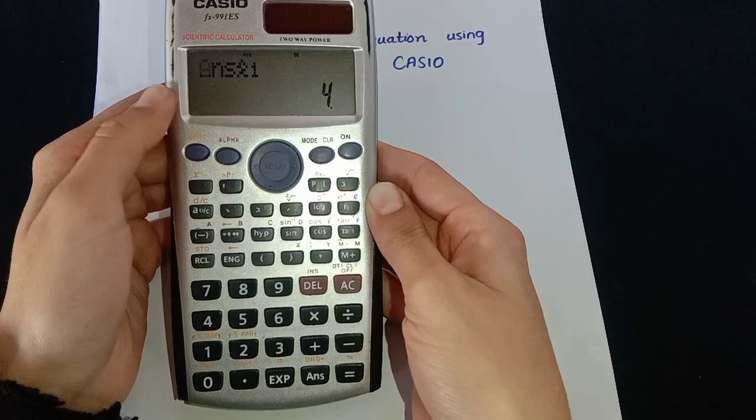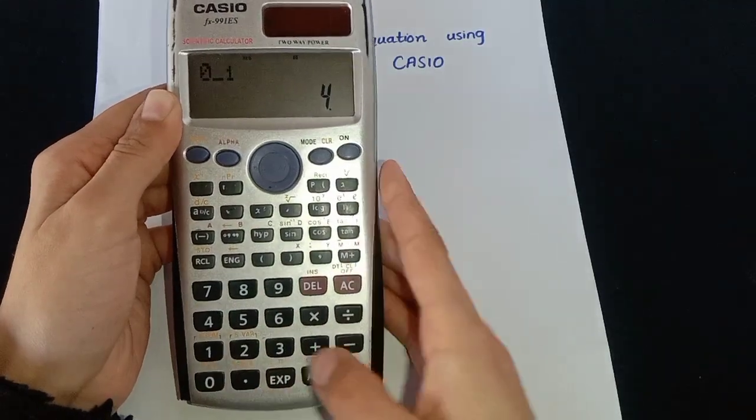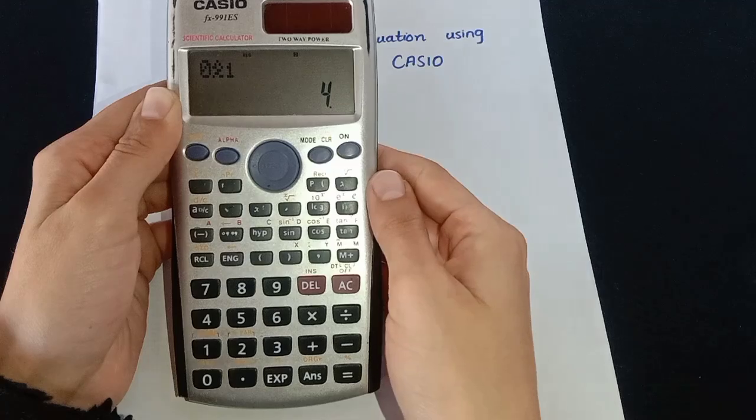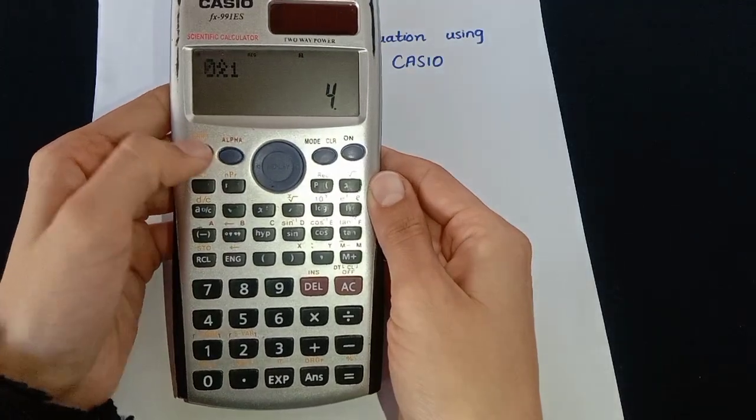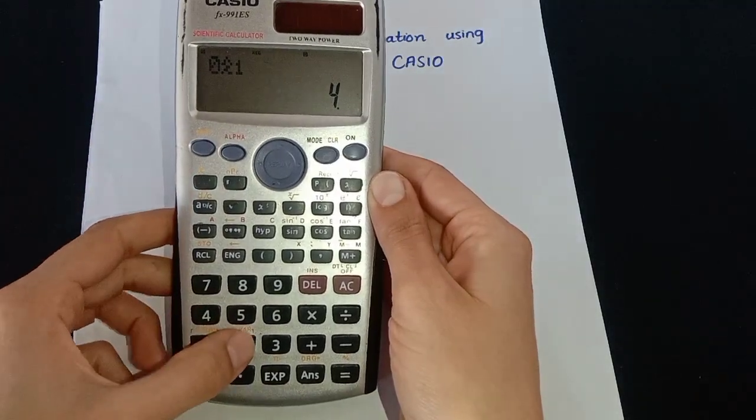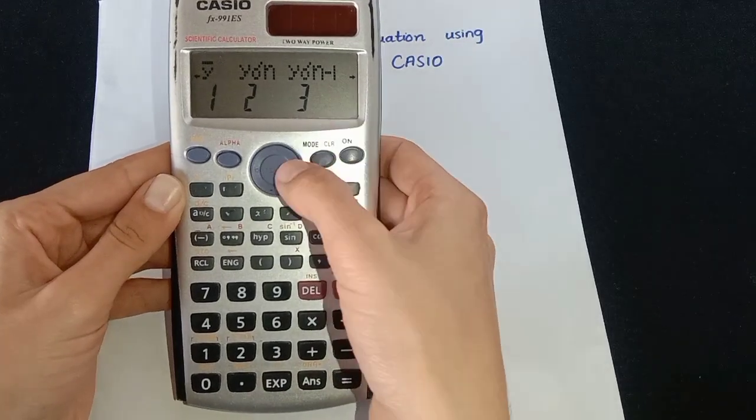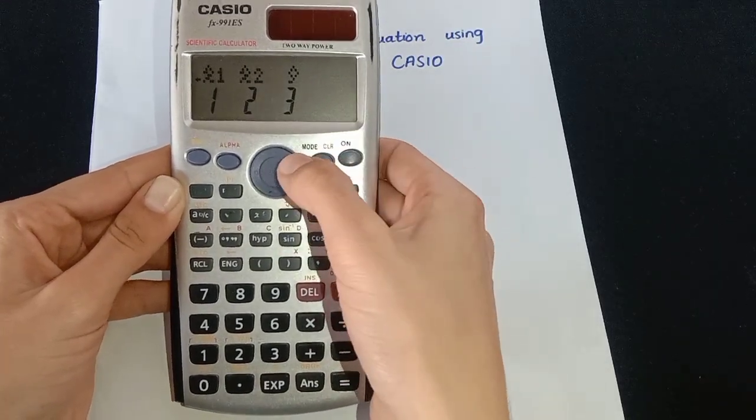left arrow key, then press 0 and then equal sign, and we will get the first value for x1, which is equal to 4. Now again press shift key and then press 2, and press the right arrow key and